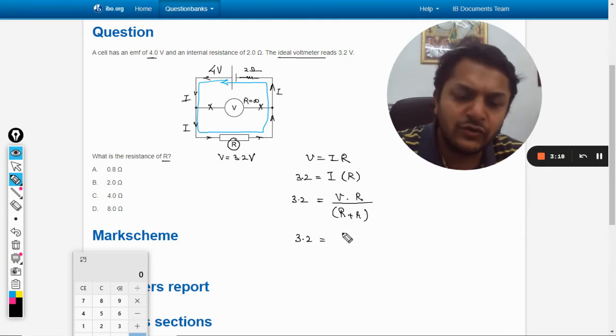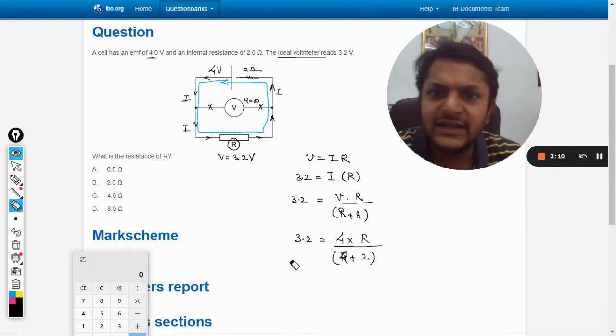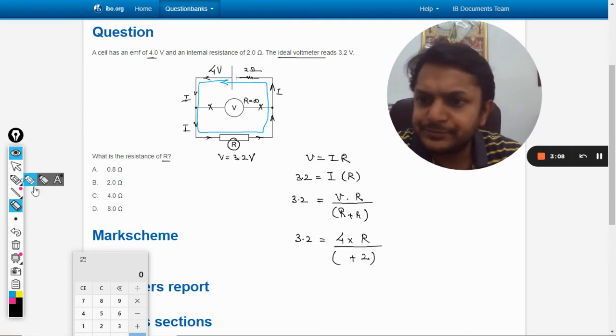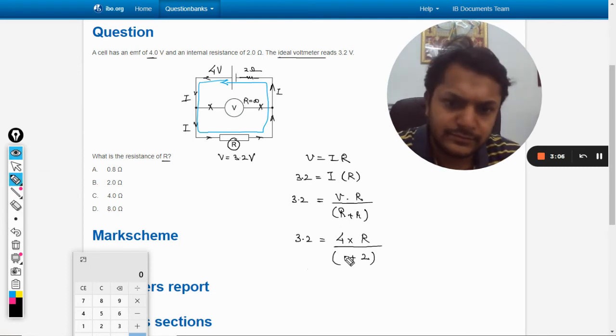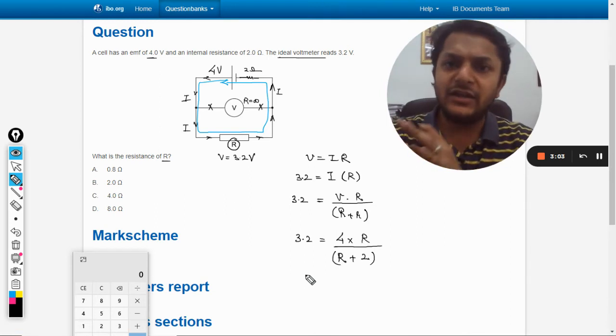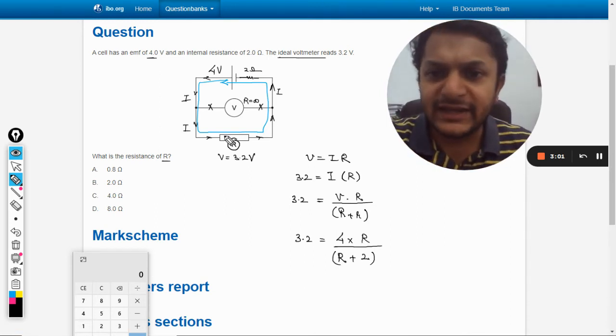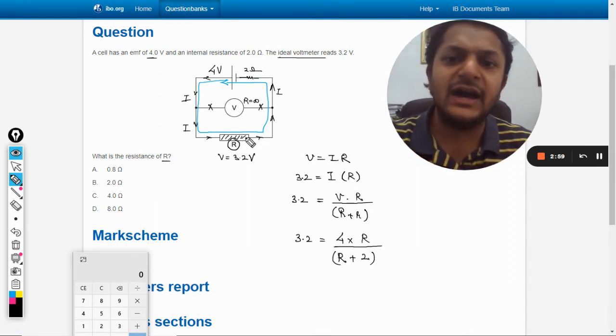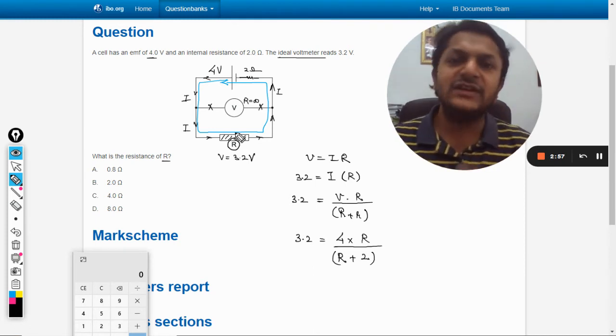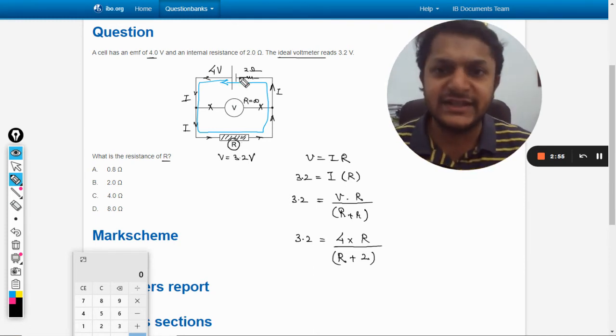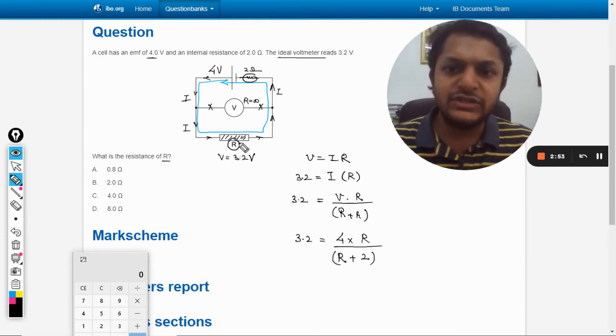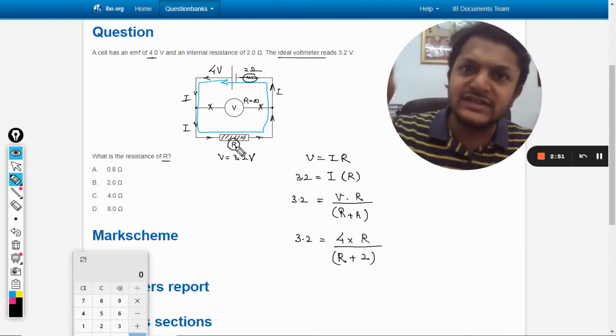Into R is equal to 3.2. So 3.2 equals voltage 4, resistance R is unknown, and the internal resistance is 2. I hope that you understand this. What is happening is this resistance capital R is now in series with the internal resistance, that is this, because the current passing through both of the resistances is the same.